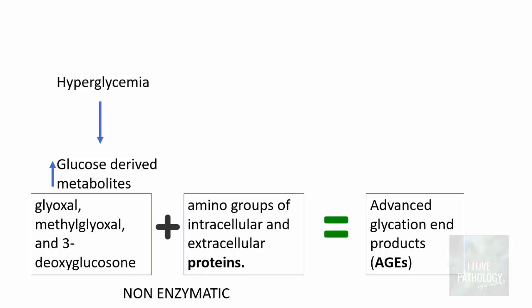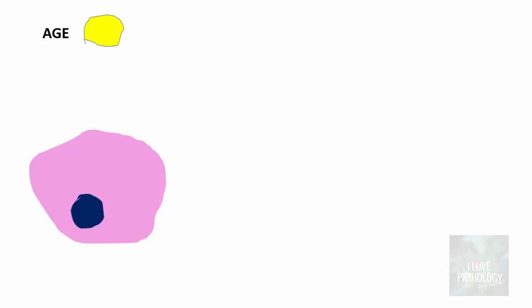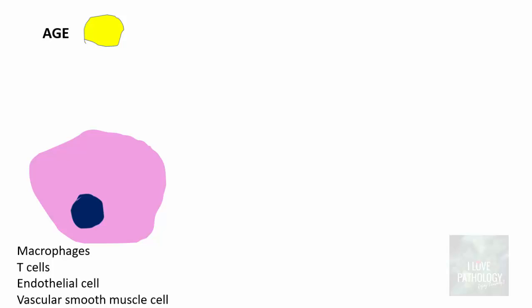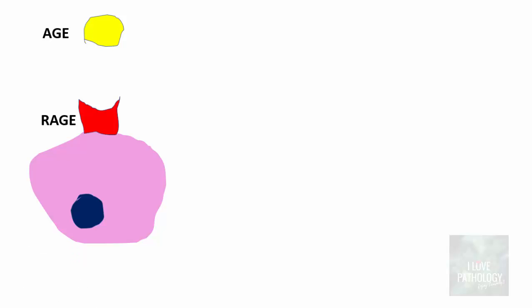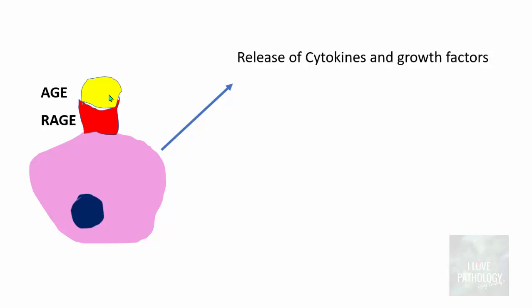What do advanced glycation end products do? AGEs act on cells including macrophages, T cells, endothelial cells, and vascular smooth muscle cells, which have receptors for AGE known as RAGE — receptor for AGE. When AGE binds to RAGE, it leads to reactions within the cell resulting in release of cytokines and growth factors. The most important is transforming growth factor beta, which results in deposition of excess basement membrane material, causing basement membrane thickening.